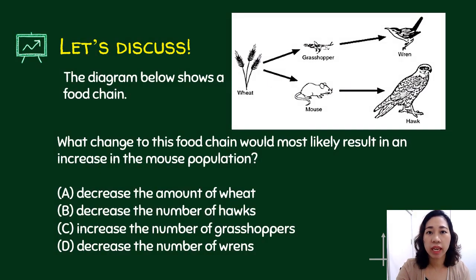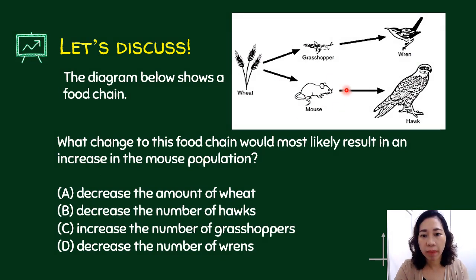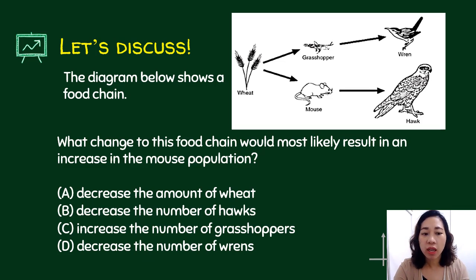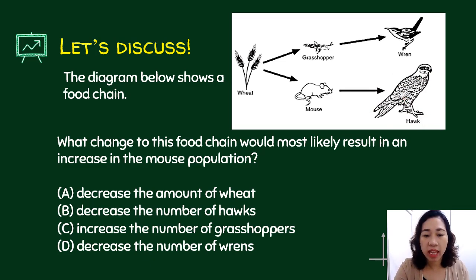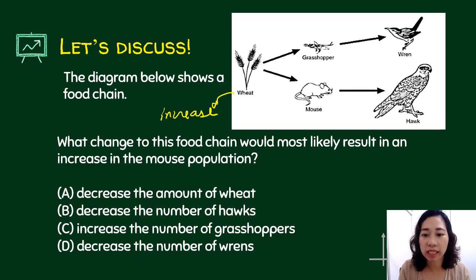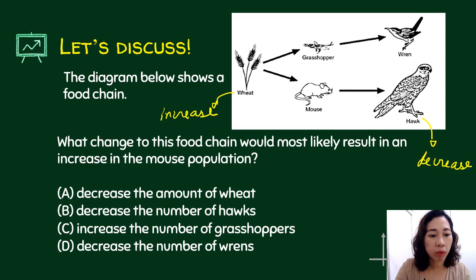The diagram below shows a food chain. What change to this food chain would most likely result in an increase in the mouse population? Looking at the mouse, there would be an increase in its population if there is an increase in its food — wheat — but one option shows a decrease in wheat. Alternatively, a decrease in the number of hawks, which feed on mice, would also increase the mouse population. The only choice present is letter B: decrease in the number of hawks.